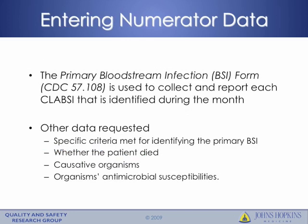Numerator data for NHSN reporting is entered on the primary bloodstream infection form, CDC 57.108. The other data requested on this form include the specific criteria met for identifying the primary bloodstream infection, whether the patient died, the causative organism or organisms, and the organism's antimicrobial susceptibilities.